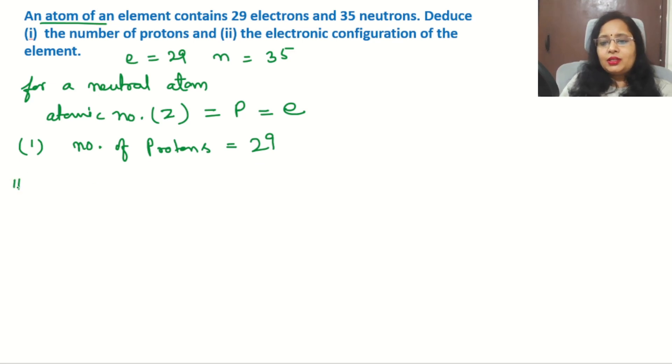Second part is the electronic configuration of the element. When we know the atomic number, we are able to write: the atomic number 29 belongs to copper. So shall we start writing copper 29?